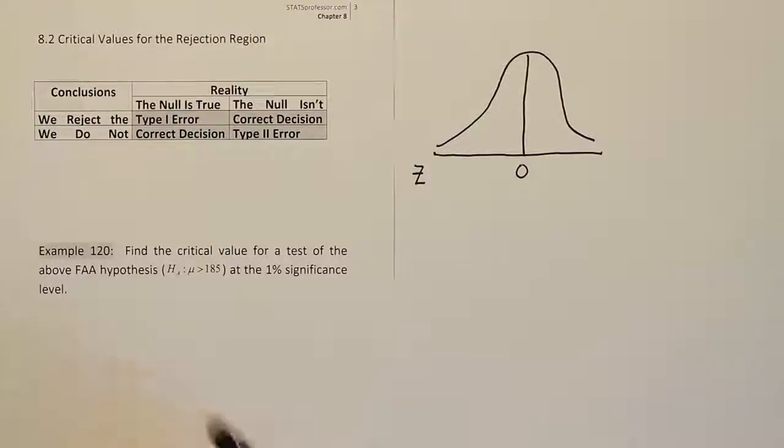Okay, example 120. It says find the critical value for a test of the above FAA hypothesis at the 1% significance level.